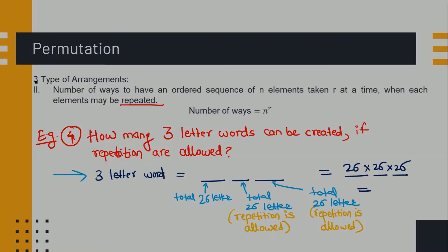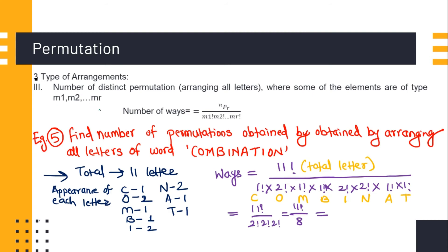For the third category of permutation, we find arrangements specifically for words where some elements are repeated. Example: find the number of permutations obtained by arranging all the letters of the word 'combination.' First, count the total letters — there are 11 letters in 'combination.'